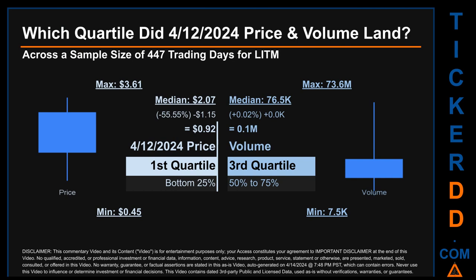Hello, my name is Maria. Which quartile did the April 12th, 2024 price and volume land in? Across a sample size of 447 trading days, the maximum end-of-day price for LITM was $3.61, while the minimum was 45 cents. The April 12th, 2024 price of 92 cents landed within the first quartile, meaning it was within the bottom 25% of all sampled end-of-day prices. The day's volume landed within the third quartile — within the 50 to 75% range — with a max daily volume of 73.6 million and a minimum of 7.5 thousand.